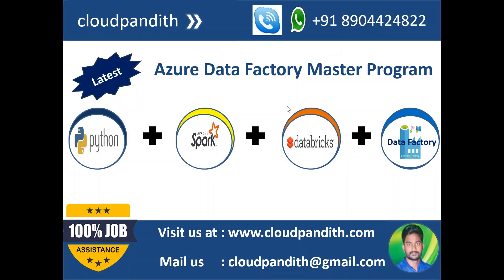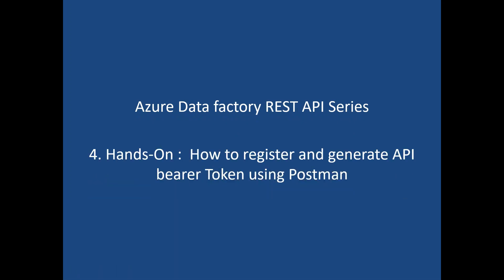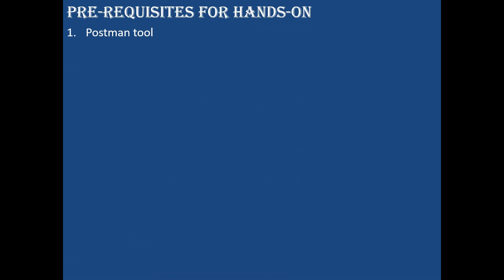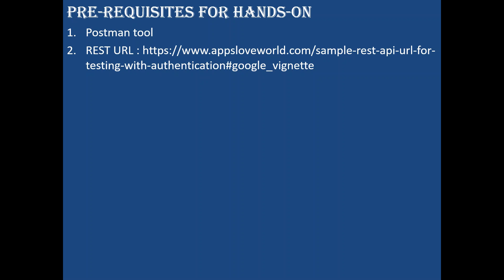Hi, welcome to Cloud Pandit in this Azure Data Factory master program. In today's hands-on session, we will be discussing how to register and generate an API bearer token using Postman. This token we will be using in the next few sessions to access data from a REST API. The prerequisites are knowing how to install and use Postman, and having the REST URL to which we need to register and login. I will keep the URL in the description.